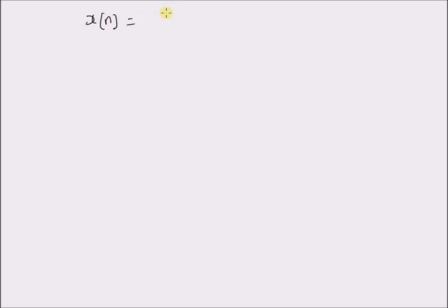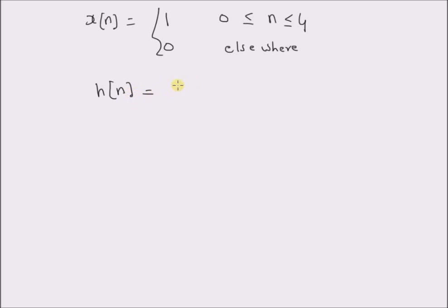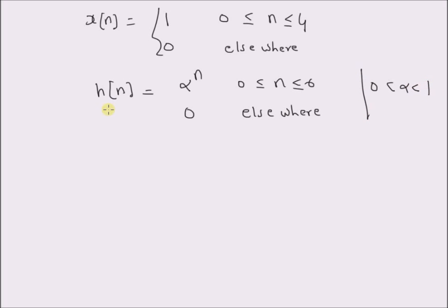Given the input x[n] equal to 1 for values of n between 0 and 4, and 0 elsewhere, and the impulse response h[n] equal to alpha^n for values of n between 0 and 6, and 0 elsewhere. Note that the value of alpha lies between 0 and 1. We can clearly see that the convolution sum can have different functional structures in the following intervals.